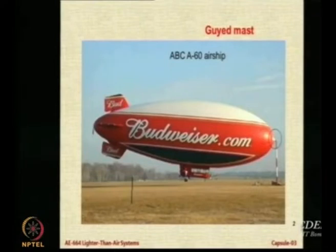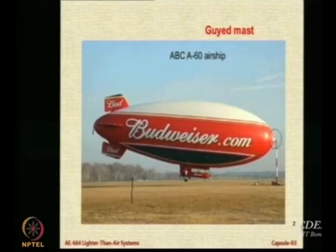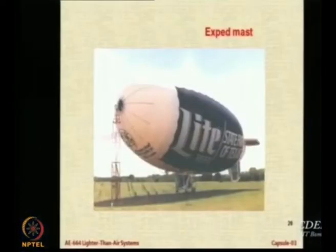A version of this airship called A60 Plus had come to India to take part in the aerial flight during the finals of the first IPL tournament. Unfortunately, it did not get approved to fly, but it did come to Mumbai — to Juhu airport — and we were there to receive it and talk to the people working on that airship. They have this guide mast, and then you have the expert mast which is a truss type structure.